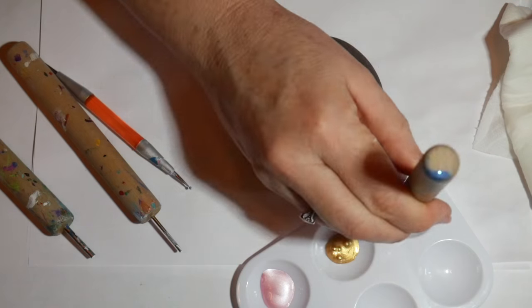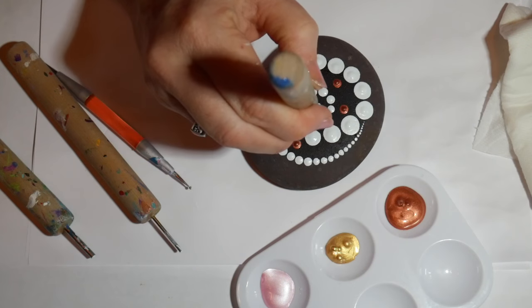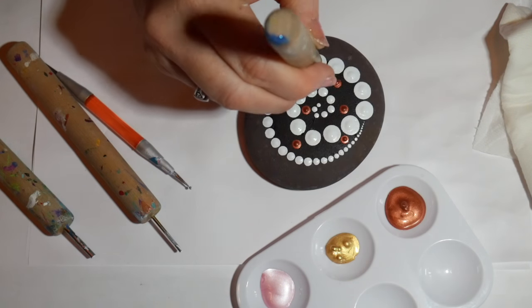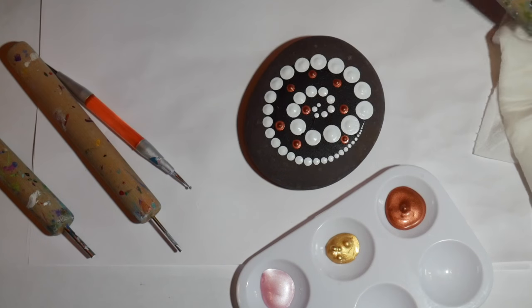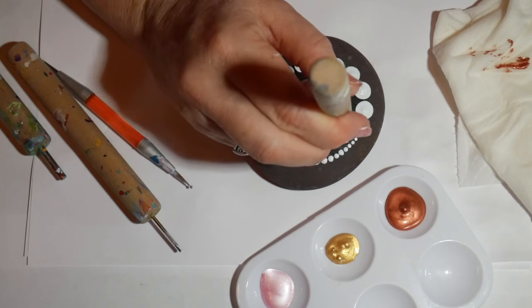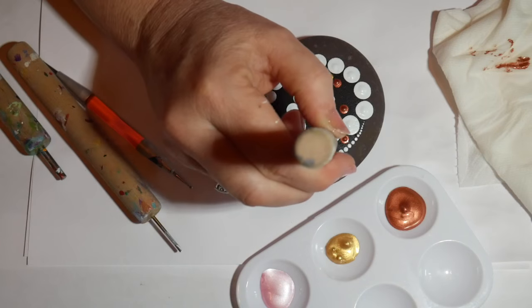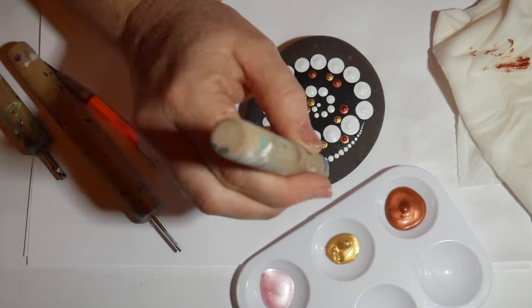And this is the really fun part. You just start filling in the space. Start with largest dots in your primary color. Mostly this shell is sort of a bronze color, so I made the biggest dots in bronze.